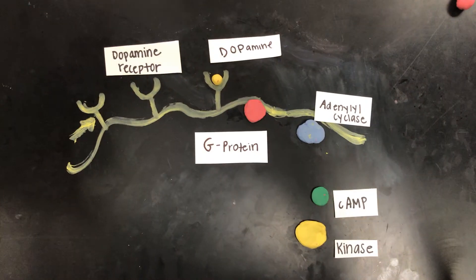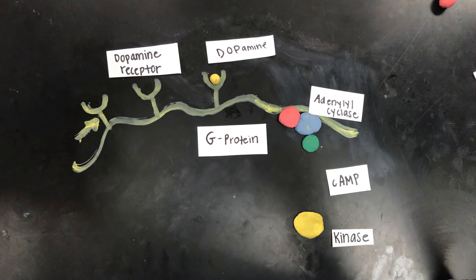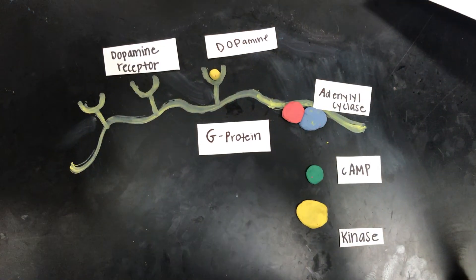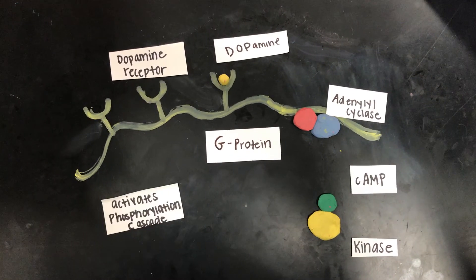Dopamine binds to the dopamine receptors, activating the G protein to bind to the adenylate cyclase. The cAMP moves towards the adenylate cyclase and then activates the kinase to activate the phosphorylation cascade.